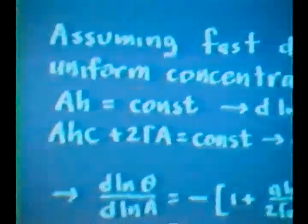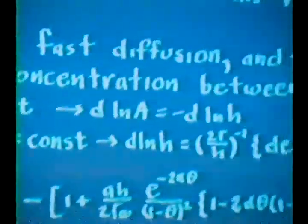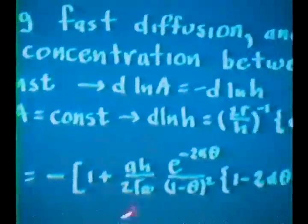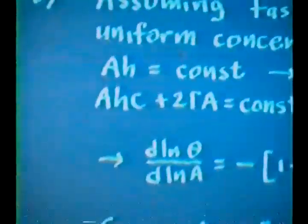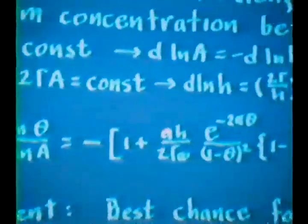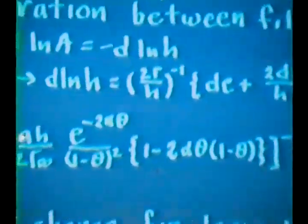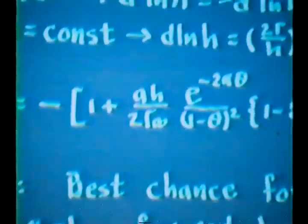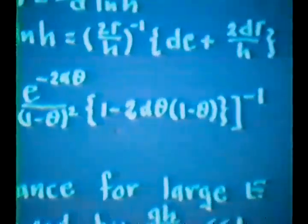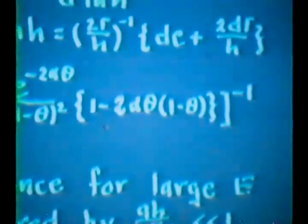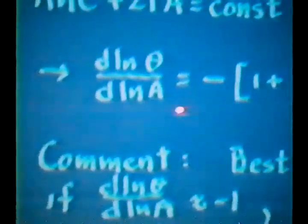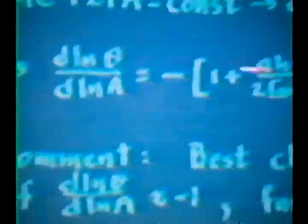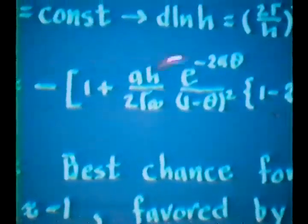Running through all of this, one can get a law for d log theta d log A, which depends on a ratio of numbers, namely the saturation surface coverage, the Szyszkowski constant in the Frumkin equation, the thickness of the film, and then of course this parameter alpha. And essentially what you would like to have is d log theta d log A as close to minus one as you can have it. And that is, of course, favored by having this quantity very small.